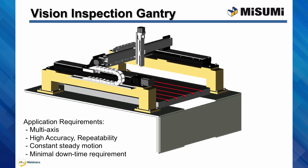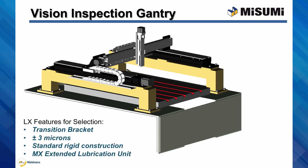In this vision inspection gantry, we once again are looking for a multi-axis installation with high accuracy and repeatability, and constant steady motion to ensure the product being inspected is always in view. Due to the high volume of products being inspected, ensuring minimal downtime is a priority as well. Similar to the MIG welding fixture, the transition brackets, excellent repeatability, and standard rigid construction are all key features that help the LX succeed, and the optional MX Extended Lubrication unit built into the actuator can be selected to reduce the frequency of maintenance and lubrication.